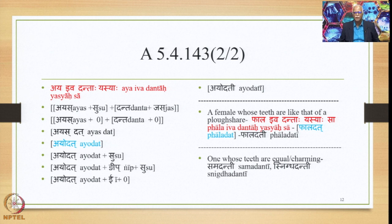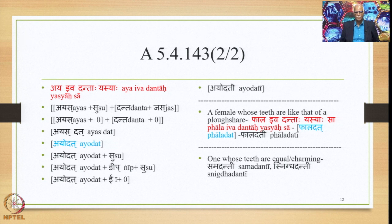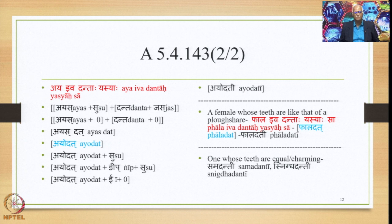Similarly, a female whose teeth are like that of a plowshare — Falaiva Dantah Yasyah Sah — this is a Saudhnyaya, and we get the Samasa output Faladatt, and the feminine form would be Faladati. Now, when the meaning denoted is one whose teeth are equal or charming, and this is not a Saudhnyaya, even though it is in the feminine we don't apply the substitution. Rather we get the form Samadanti as well as Snigdhadanti.